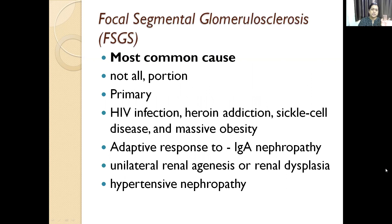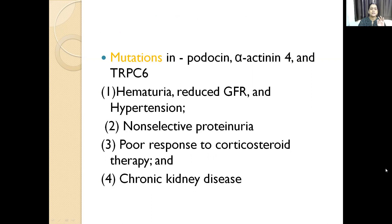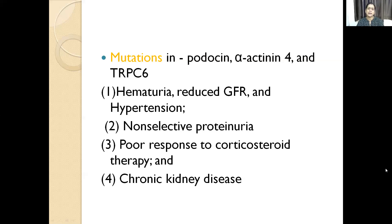FSGS can occur in children or adults, either primary or secondary, and then there is an adaptive response. In the pathogenesis, we have mutations in nephrin, podocin, alpha-actinin-4, and TRPC6 — or it can be circulating immune complexes or genetic mutations causing glomerular damage. After podocyte damage, entrapment of protein leads to plasma protein leak, hyalinosis, and extracellular matrix deposition with fibrin strands leading to sclerosis.